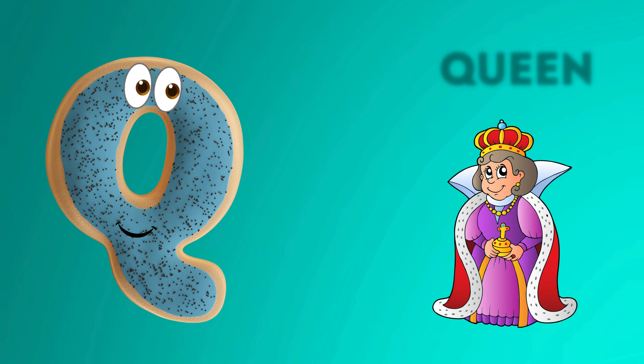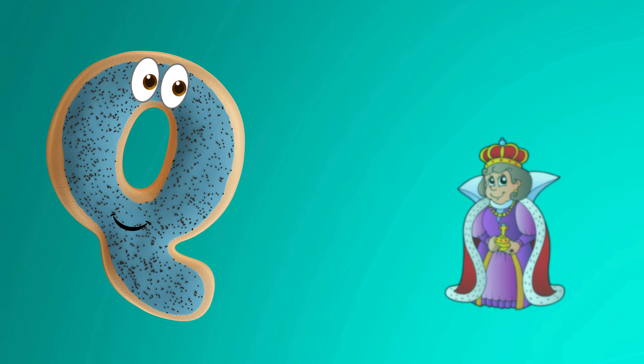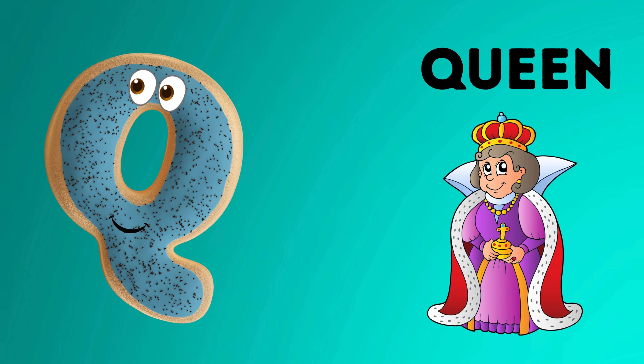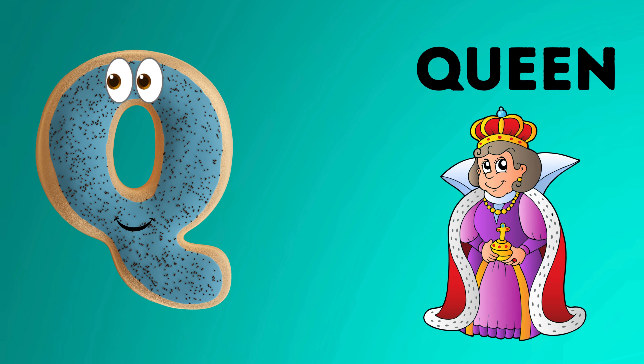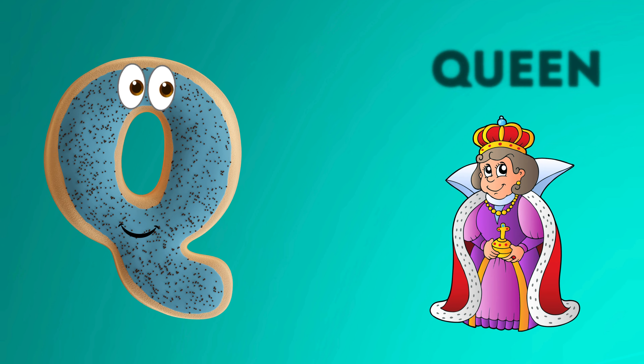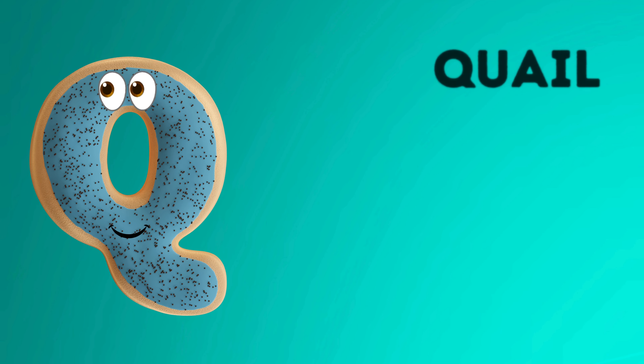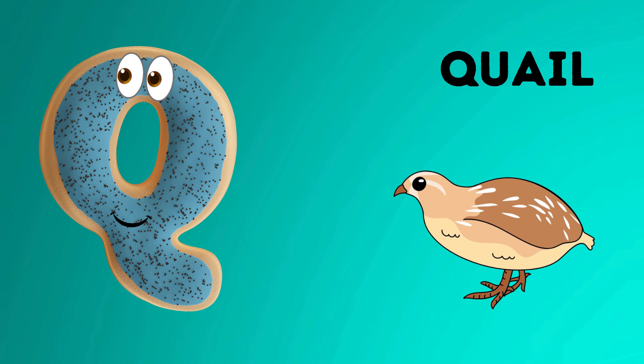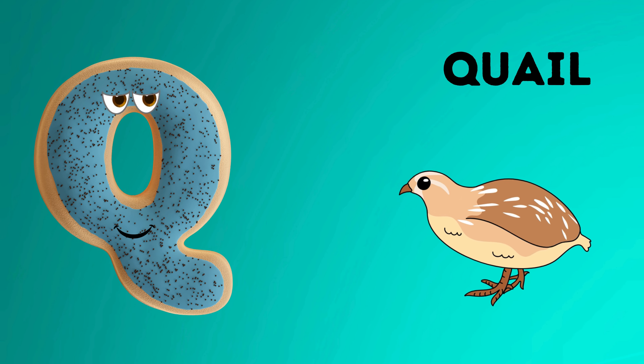Q is for queen, k-k-queen. Q is for quail, k-k-quail. Q is for k-k-k-queen. Q is for k-k-k-quail.